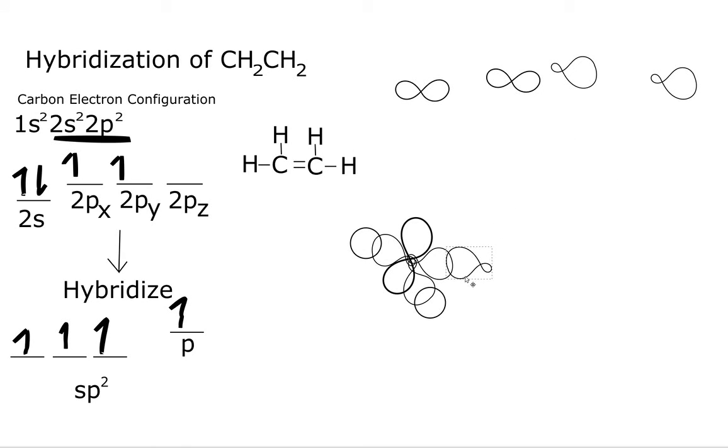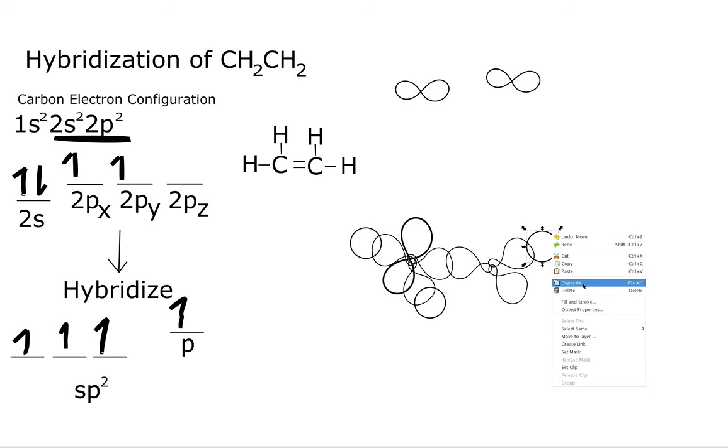So we have our sigma bond. Keep in mind, we still have hydrogens we have to bond. So these hydrogens have circles because that's an s orbital. So we'll duplicate that again. And there's our hydrogens.